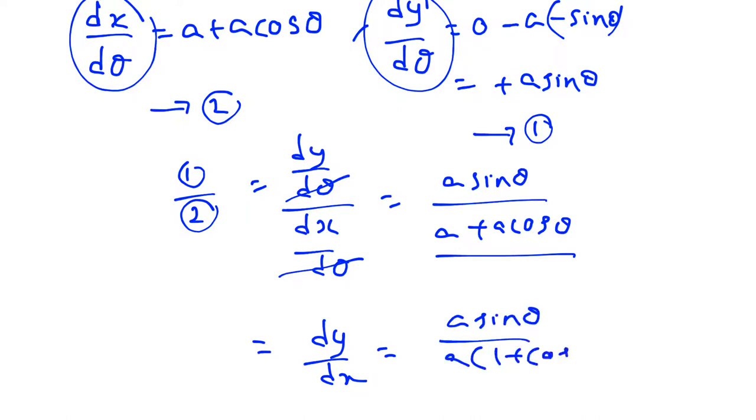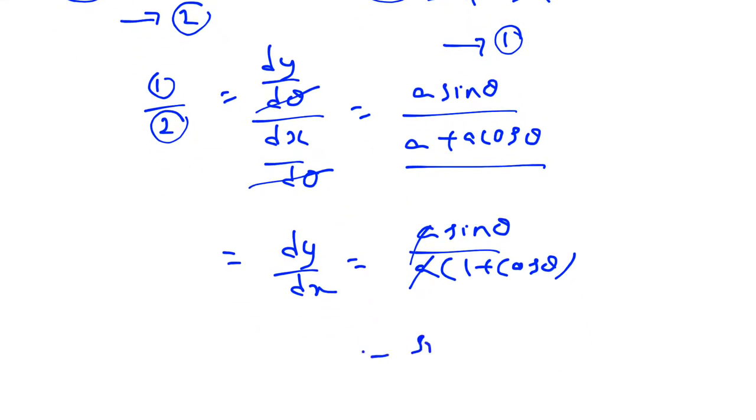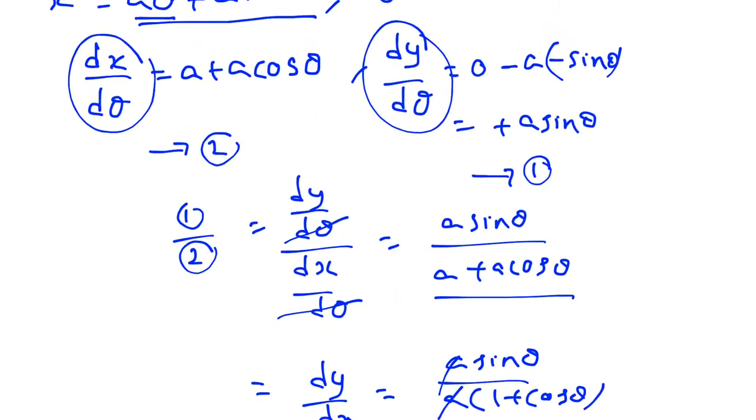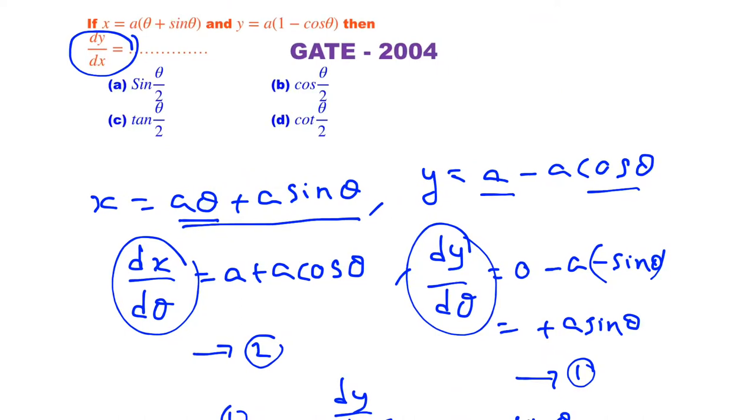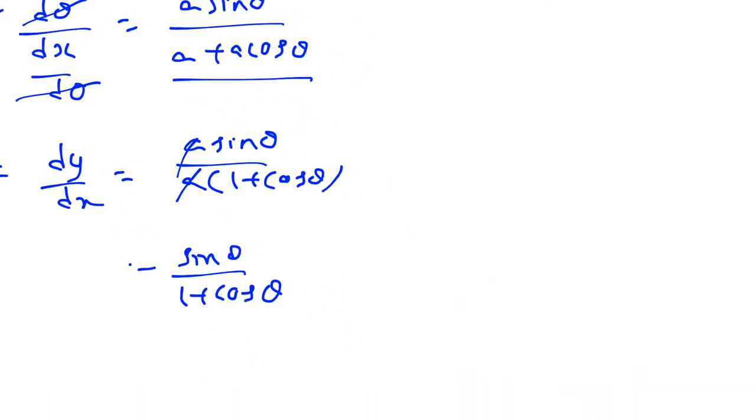When you observe here, all options are in half-angle formulas. So we can further simplify. I'm going to write the numerator as sin(2θ/2), which is sin θ, and denominator 1 + cos θ as 2 cos²(θ/2).